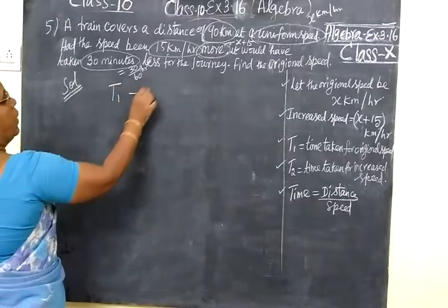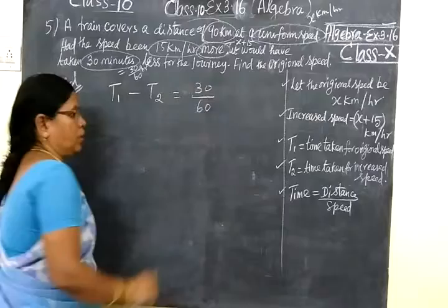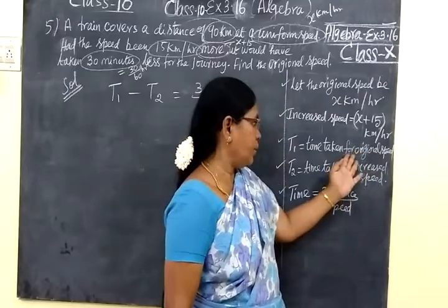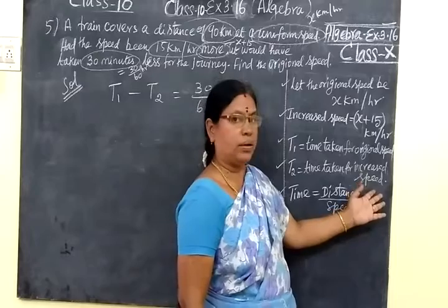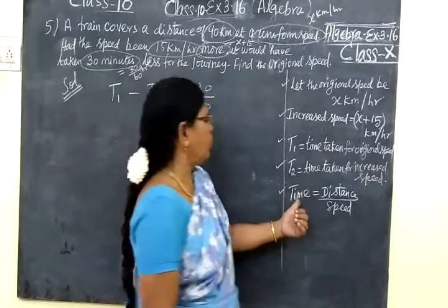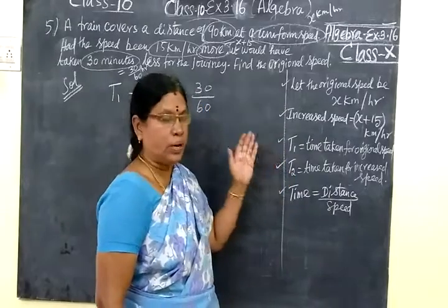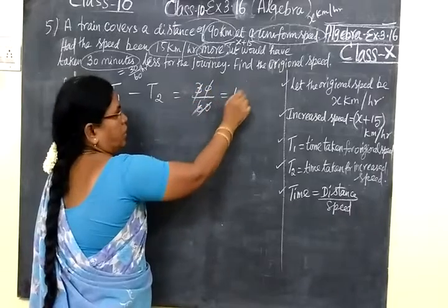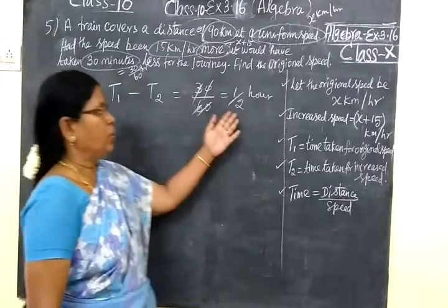In the part, T1 minus T2 is equal to 30 by 60. In the time 1, time 1 is the original spoiler for to get the time. Increased spoiler on the time for, what time is the time 2? So, time equal to formula, distance by speed. So, in the time 2, difference in the half an hour. 30 by 60, you are getting half an hour.